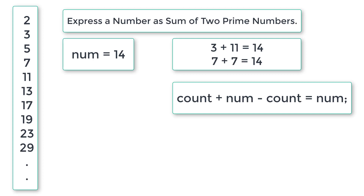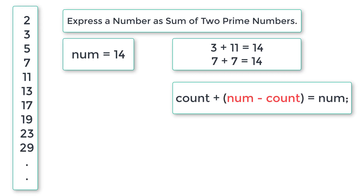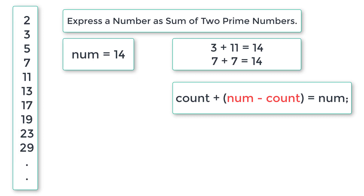In the code, we initialize the loop counter count to 2 and iterate the for loop until count is less than or equal to num minus count. We increment count not by 1 but by changing it from one prime number to the next — 2, 3, 5, 7, 11, etc. This is the logic you need to keep in mind to write our C program.